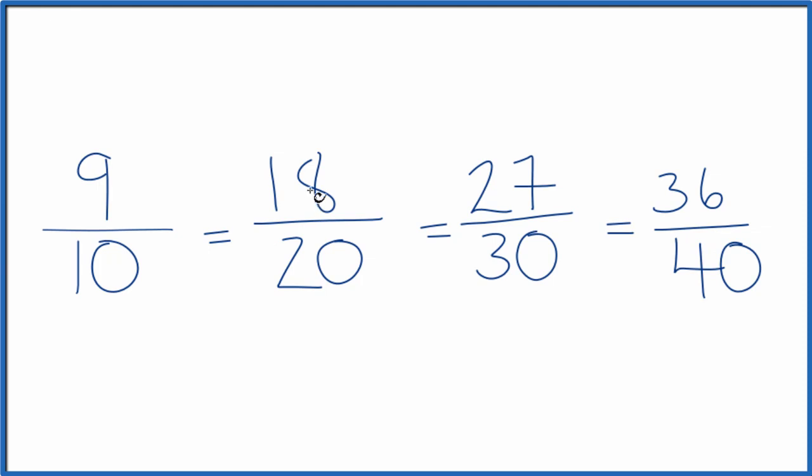If you divide 9 by 10, 18 by 20, 27 by 30, or 36 by 40, you'll get the same decimal answer, 0.9. These are all equivalent fractions. It's just that 9 tenths, that's simplified. That's in lowest terms. But they're all equal. They have the same value.